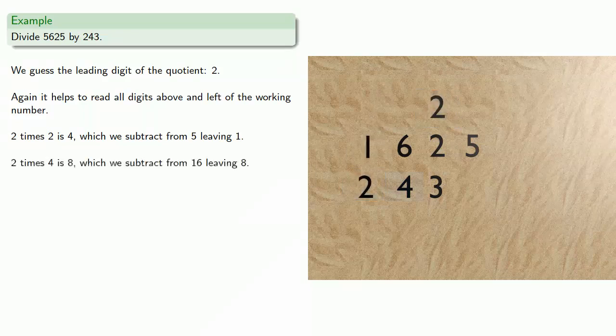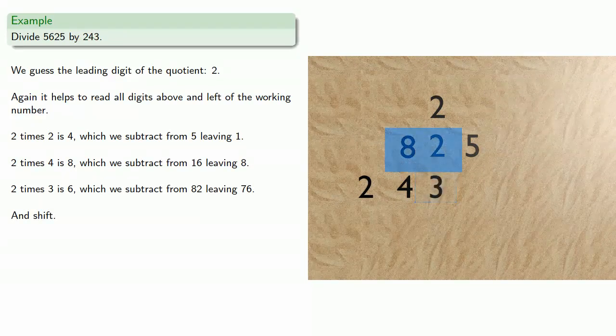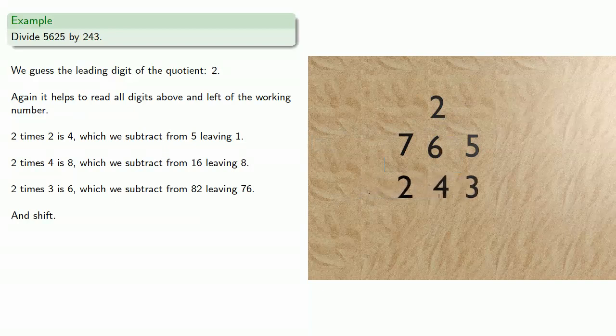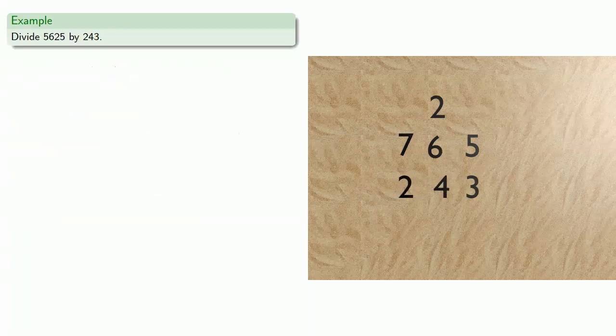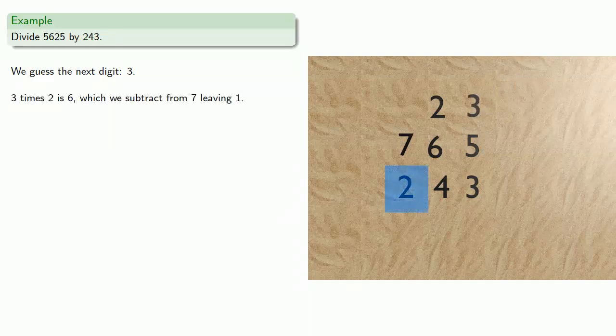2 times 4 is 8, which we subtract from 16, leaving 8. 2 times 3 is 6, which we subtract from 82, leaving 76. And shift. Now we guess the next digit, 3. And again, 3 times 2 is 6, which we subtract from 7, leaving 1.